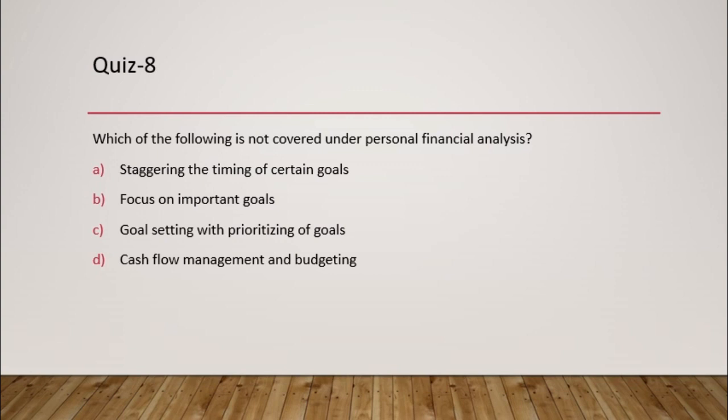Question 8: Which of the following is NOT covered under personal financial analysis? Personal financial analysis is aligned to goals, so it covers staggering the timing of goals, focusing on important goals, and goal setting with prioritization. However, cash flow management and budgeting are not part of financial analysis — they are part of financial planning. The answer is D.